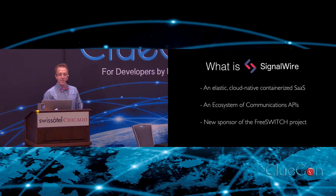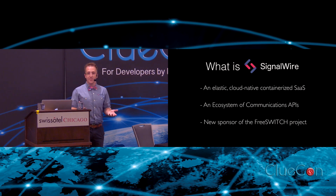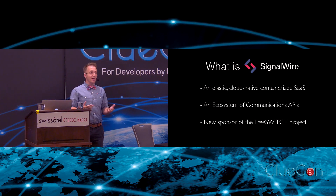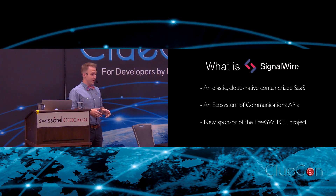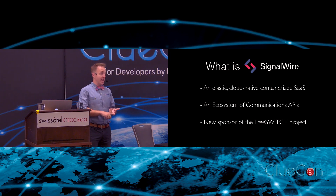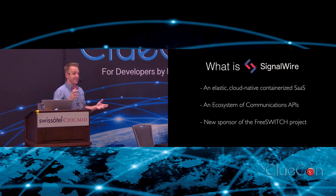So what is SignalWire? From the ground up, Tony called it a CPaaS yesterday, and that is absolutely correct. But we really are an elastic, cloud-native, containerized SaaS. It is an ecosystem of communications APIs. The core of it is powered by FreeSwitch, but there are many other APIs that come along with this that you need to run your business — you need billing, you need user management, you need account storage. Everything else that goes along with actually creating a communications company is what we're going to provide as an API service.